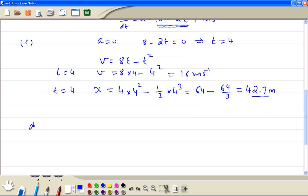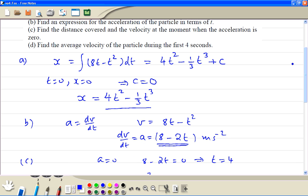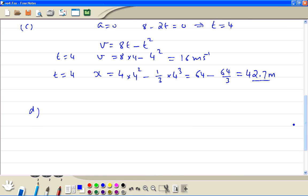Part D: the average velocity is equal to total displacement divided by time. So the displacement is 42.7 divided by 4, so we get 10.7 meters per second.